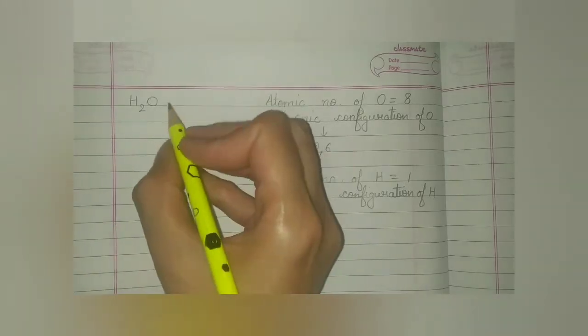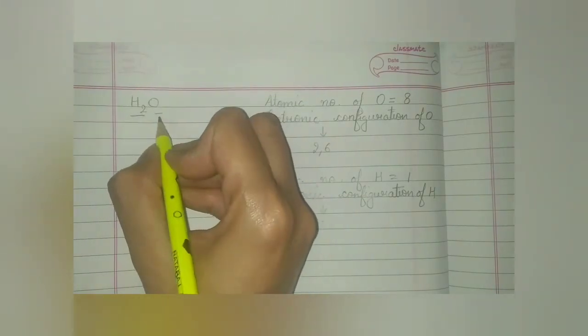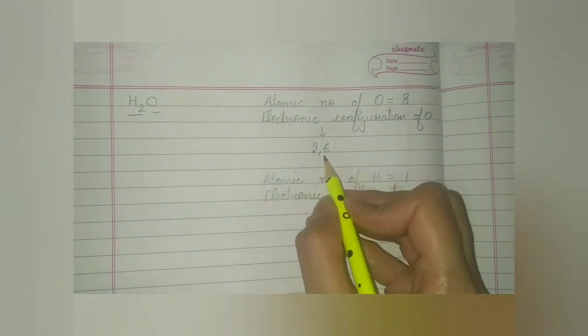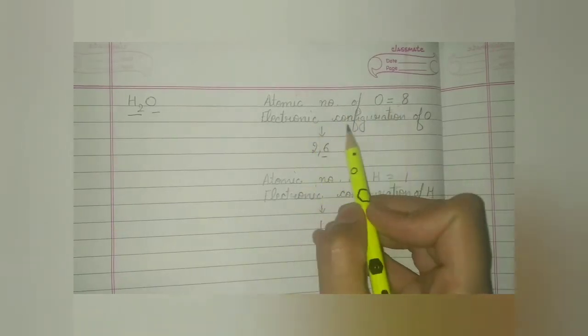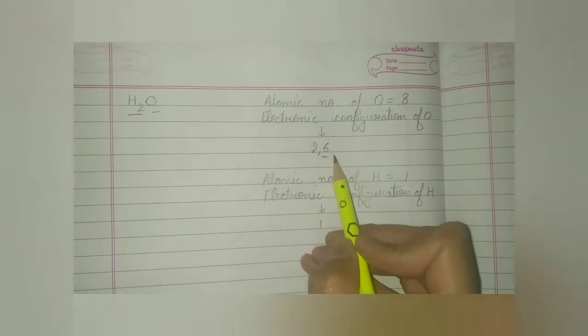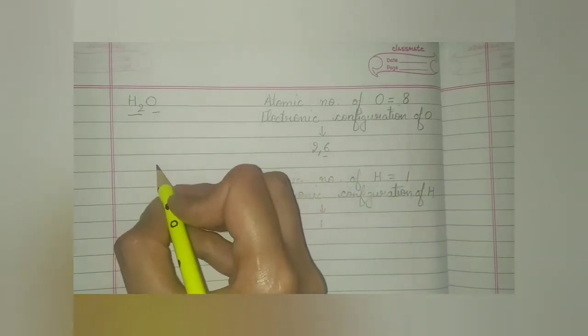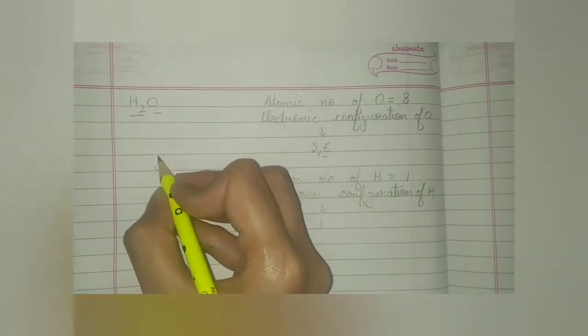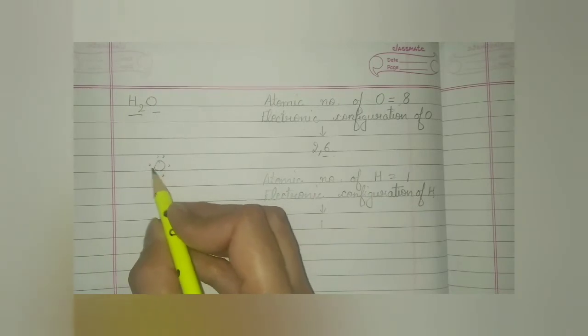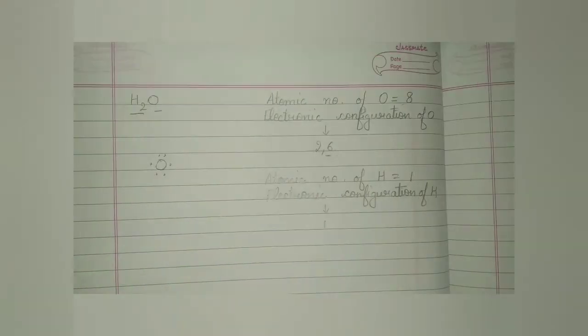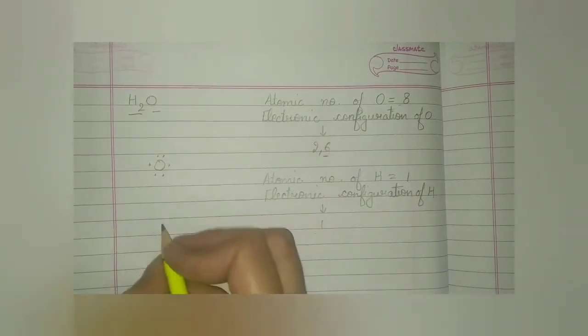One water molecule is made up of 2 atoms of hydrogen and 1 atom of oxygen. And in 1 oxygen atom, in the outermost shell, total number of 6 electrons are present. Why 6? Because atomic number of oxygen is 8 and its electronic configuration will be 2, 6. So in the last shell of oxygen, 6 electrons are there. So if we have to represent the Lewis symbol of oxygen, it can be represented as O with 6 electrons: 1, 2, 3, 4, 5 and 6 electrons. Hydrogen has 1 electron in the last shell as the atomic number of hydrogen is 1, so its electronic configuration is 1. We can represent hydrogen as H with 1 dot.